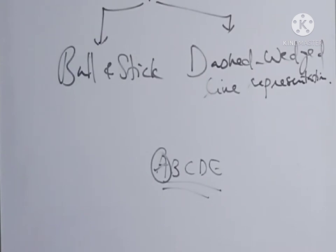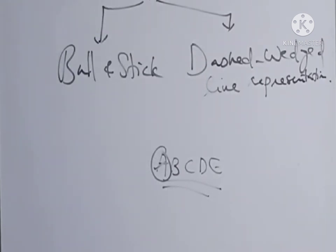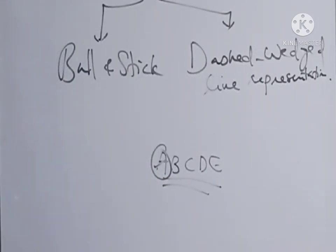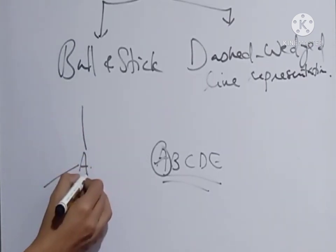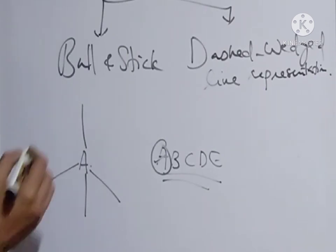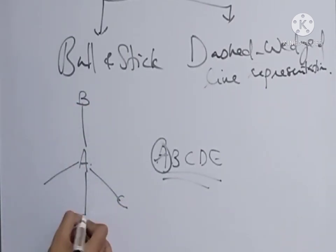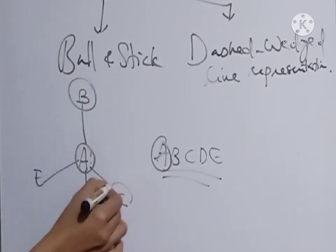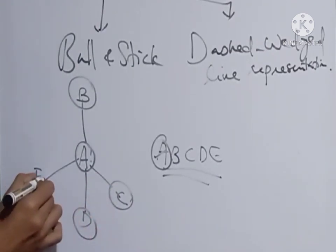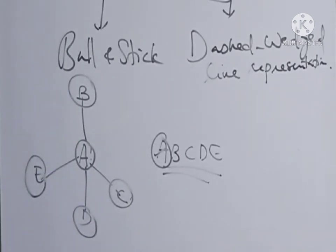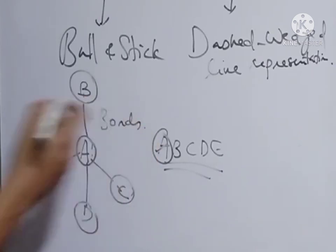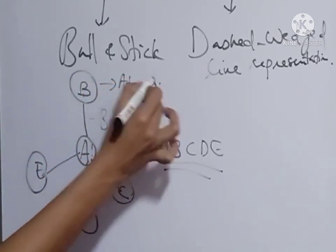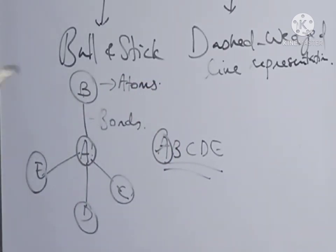In the ball and stick model, the central atom A is drawn at the center and the four other atoms B, C, D, and E are represented around it. The sticks correspond to the bonds and the balls correspond to the atoms.